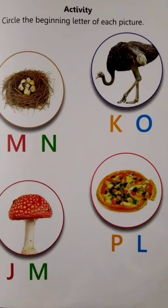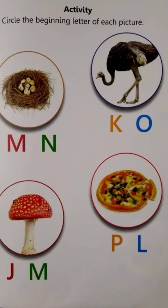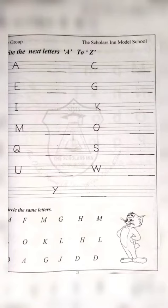Now next is — I think this is mushroom, so M for mushroom, circle the capital letter M. Now pizza — P for pizza, so circle the capital letter P. We have done our activity page. Now move on to the work file page: write the next letter A to Z and circle the same letter.